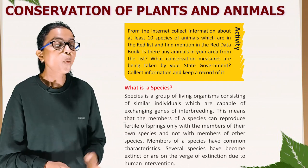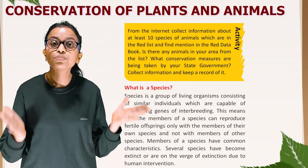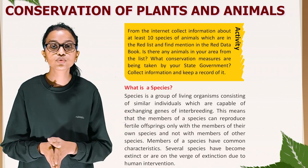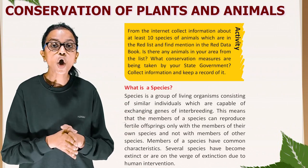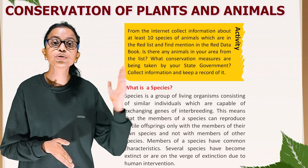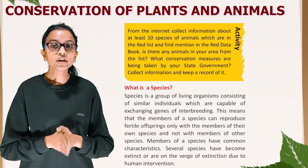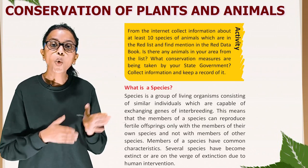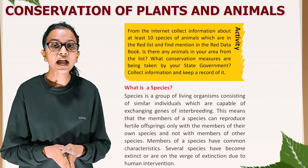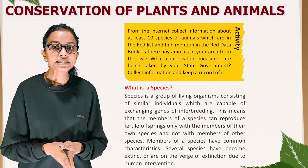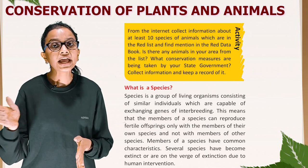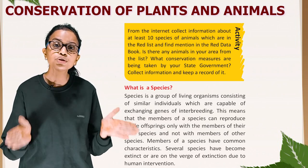What is a species? A species is a group of living organisms consisting of similar individuals which are capable of exchanging genes or interbreeding. This means that members of a species can reproduce fertile offspring only with the members of their own species and not with members of other species. Members of a species have common characteristics. Several species have become extinct or are on the verge of extinction due to human intervention.